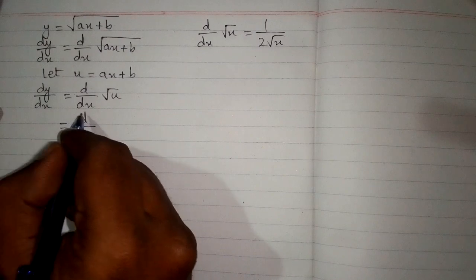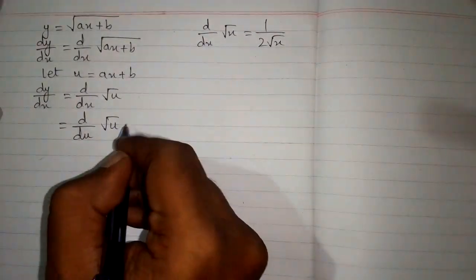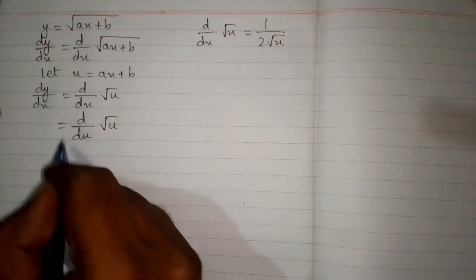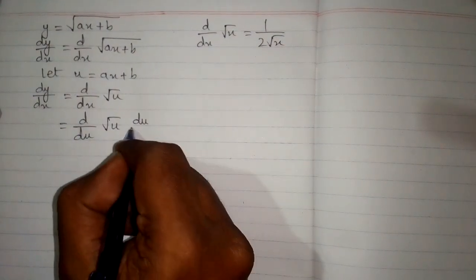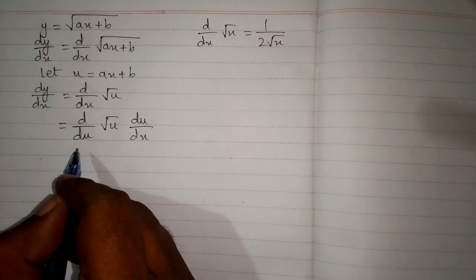So we can replace this dx by du so that we can apply this formula. And in order to balance this du we will multiply it by du by dx. And this is called the chain rule of differentiation.